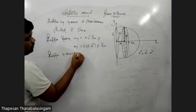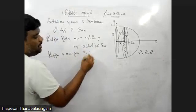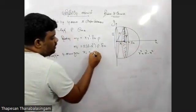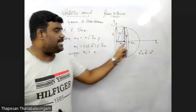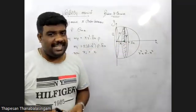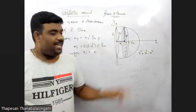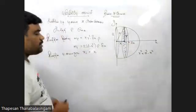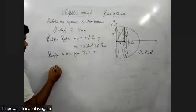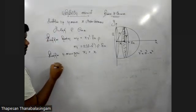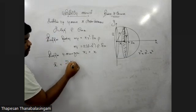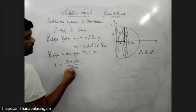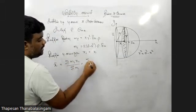X plus delta X by 2, and delta X by 2. X by 2. Sigma. Mi Xi over Sigma. Sigma. Mi pi.